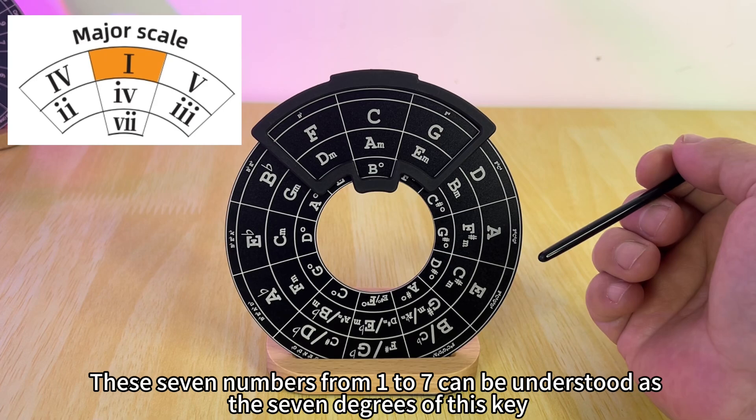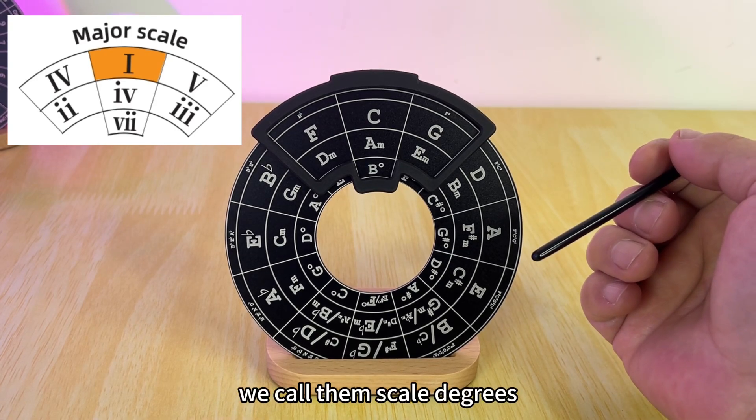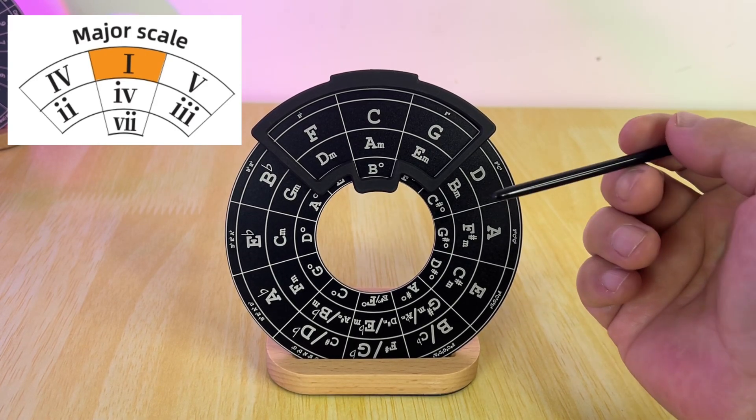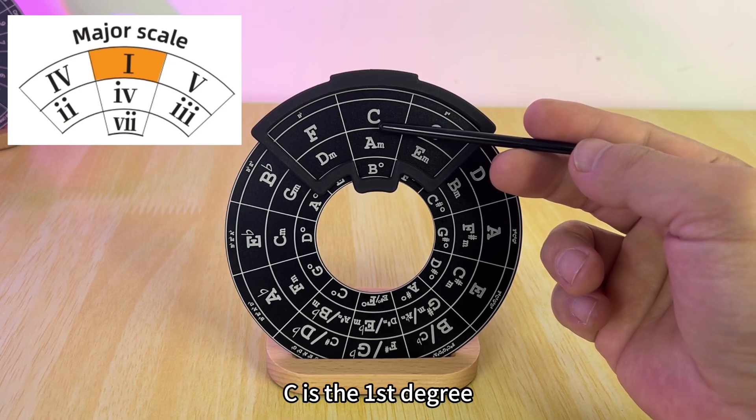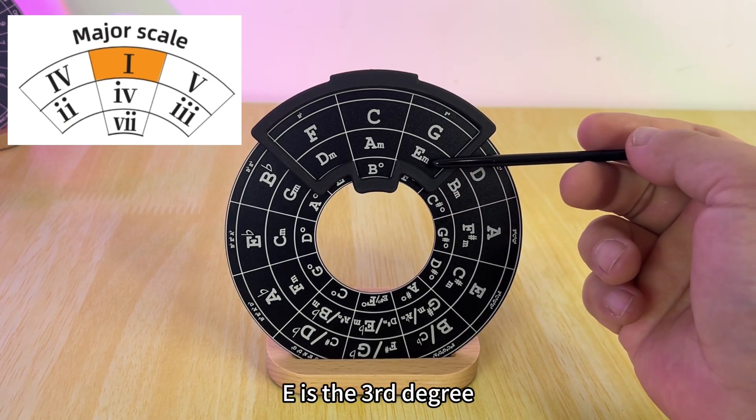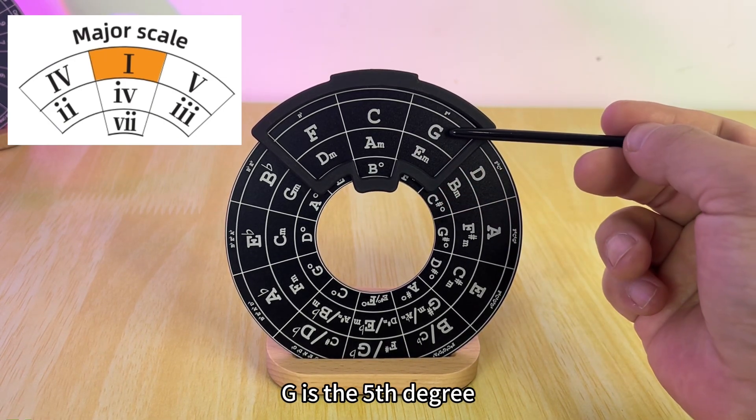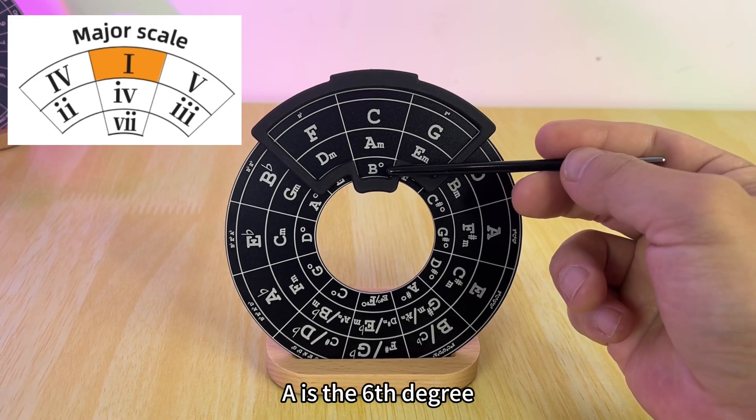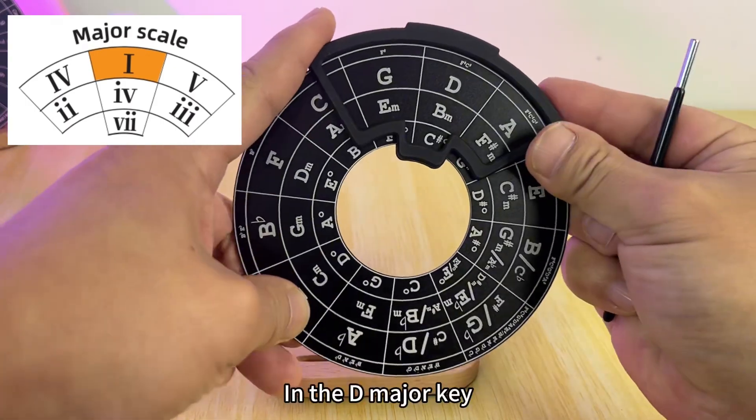In musical terms we call them scale degrees. In the C major key, C is the first degree, D is the second degree, E is the third degree, F is the fourth degree, G is the fifth degree, A is the sixth degree, and B is the seventh degree. In the D major key, D is the first degree, E is the second degree, F sharp is the third degree, G is the fourth degree, A is the fifth degree, B is the sixth degree, and C sharp is the seventh degree.